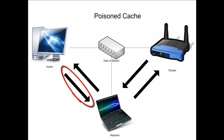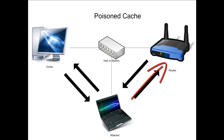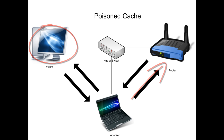Next, the attacker sends a similar reply to the router stating that he is the victim's computer. With IP forwarding, the attacker now sees traffic coming in from both ways. This is an example of a man-in-the-middle attack.